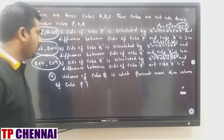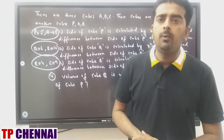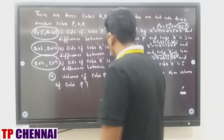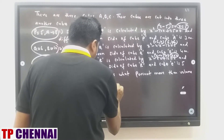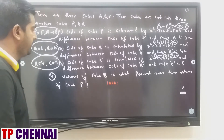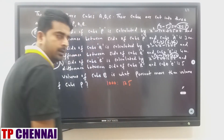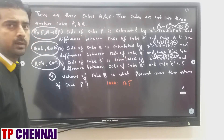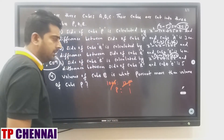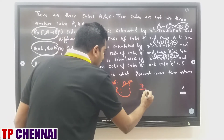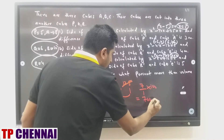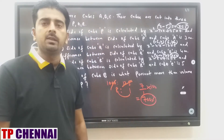Question 4: volume of cube B is what percent more than volume of cube P? Volume formula: side cubed. B side = 10, so 10³ = 1000. P side = 5, so 5³ = 125. Percent more = (1000 minus 125) / 125 × 100 = 875 / 125 × 100 = 700%. Answer is 700 percent.